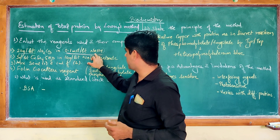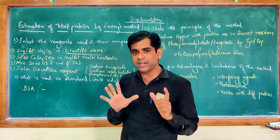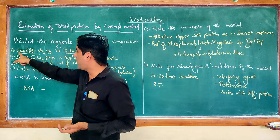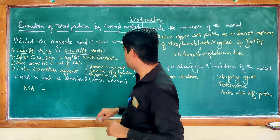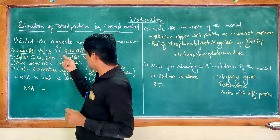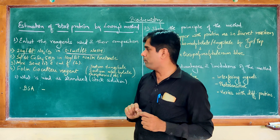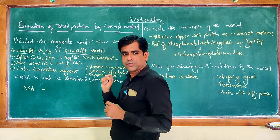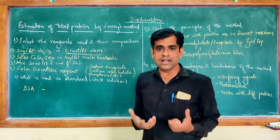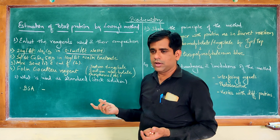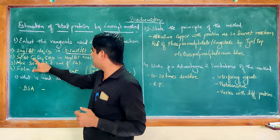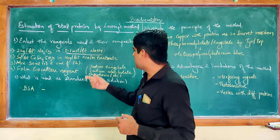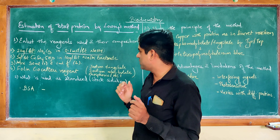For NaOH, the molecular weight is 40 (Na=23, O=16, H=1), so to prepare 0.1 mol per liter: for 100 ml you add 0.4 grams, and for 1 liter you add 4 grams. For sodium carbonate at 20 g/L, if preparing 100 ml you add 2 grams. The second component is 5 grams per liter of copper sulfate in 10 grams per liter of sodium potassium tartrate, also known as Rochelle salt. For 100 ml of tartrate solution you add 1 gram; for copper sulfate in 100 ml you add 0.5 grams.